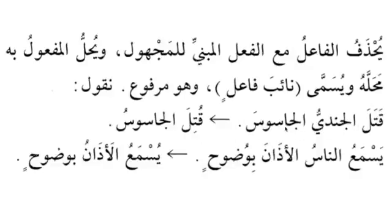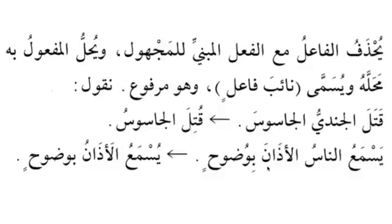Yuhillu al-maf'ul bihi mahallahu - the maf'ul bihi is placed in its position. Wa yusamma naib al-fa'il - it is called the naib fail. The naib fail is also marfu. Example: katalal jundiyyu al-jasusa - the soldier killed the spy. To make it majhul: kutilal jasusu - the spy was killed; naib fail is jasusu. Yasma'u al-nasu al-adhana biwuduh - the people hear the adhan clearly. Majhul: yusma'ul adhanu biwuduh - the adhan is heard clearly; naib fail is adhanu.